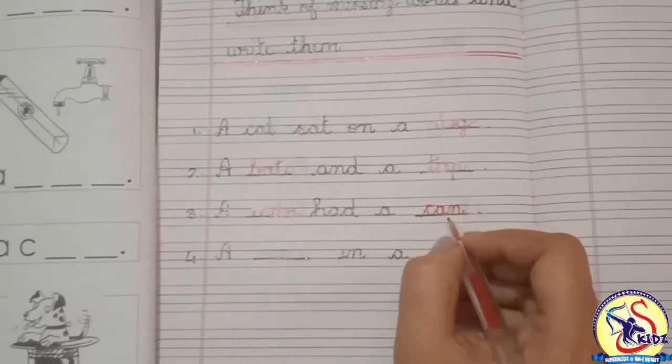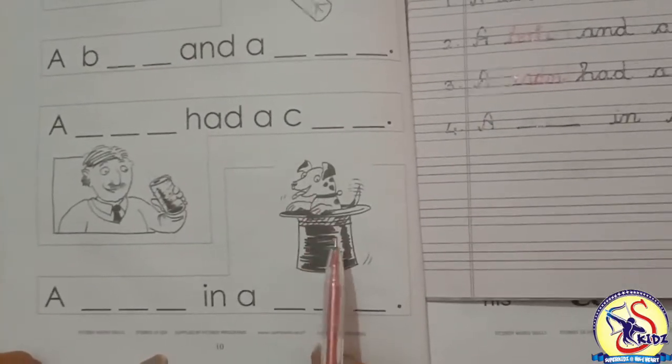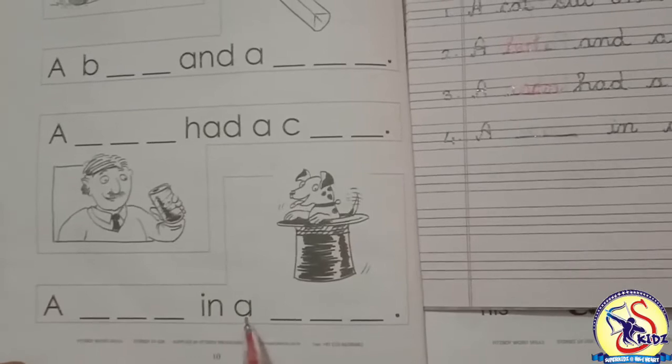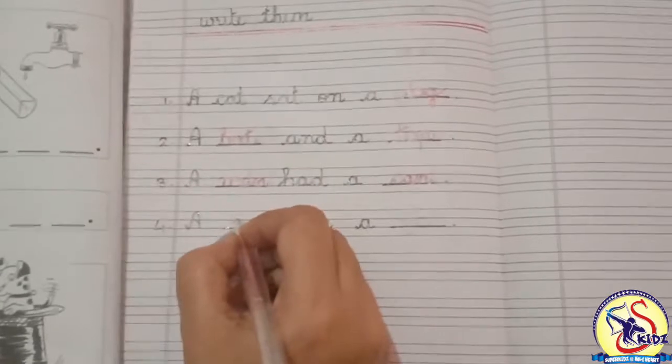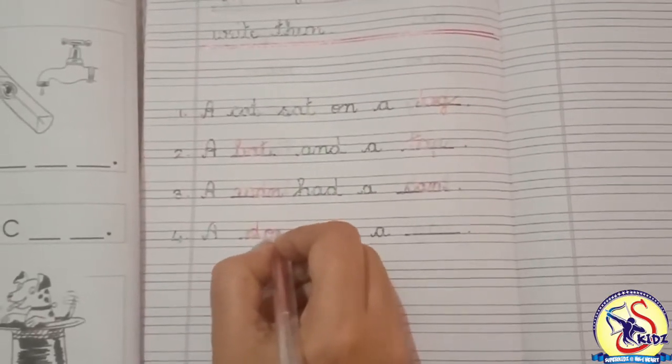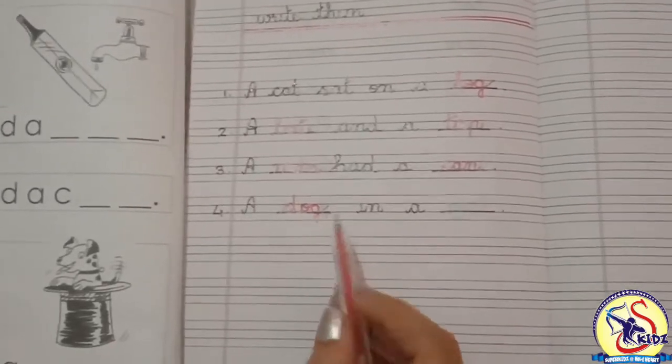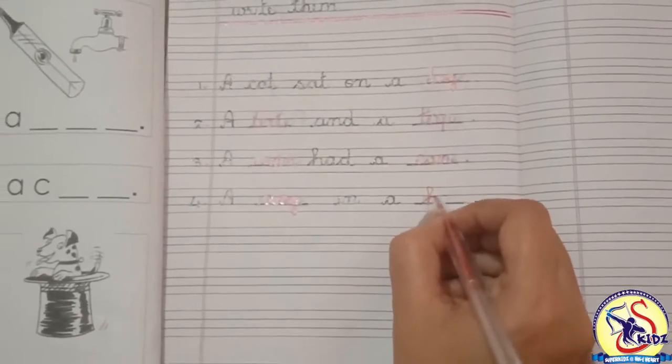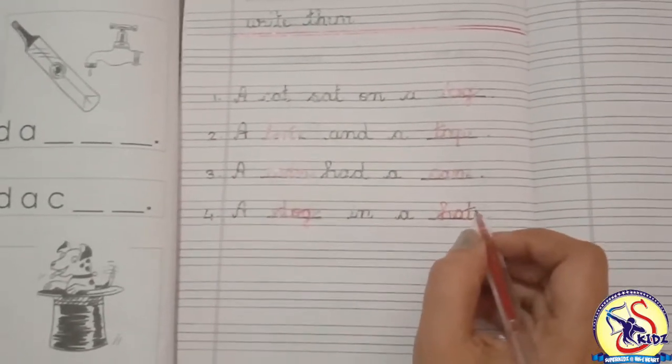See the next picture. In this picture there is a dog and a hat. A blank in a blank. A dog, D-O-G dog, in a hat, H-A-T hat.